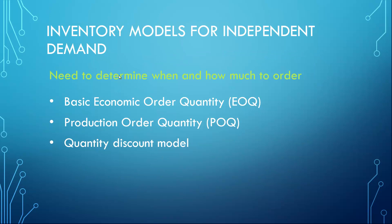In the previous session we identified the level of inventory that will trigger a replenishment order, and we called it safety stock. In the next few slides and the next session, we will go over different inventory models for independent demand to determine how many items to order based on demand forecast. The three models are: the basic economic order quantity, the production order quantity, and the quantity discount model.